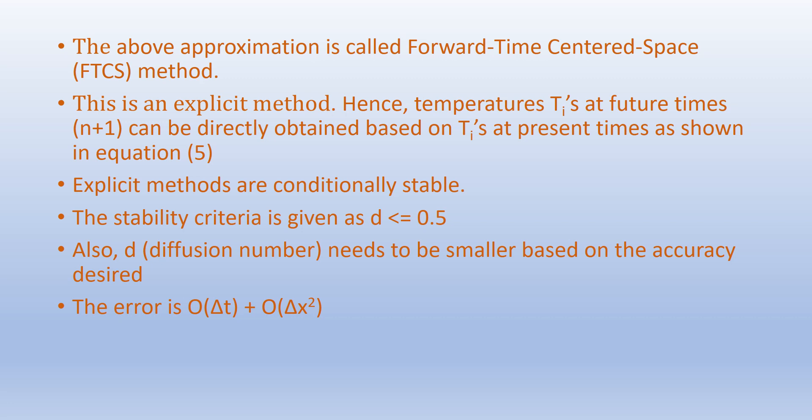The FTCS method is an explicit method, so temperatures at future time n+1 can be directly obtained based on temperatures at the present time, as shown in equation 5. The stability criteria requires D ≤ 0.5 for 1D diffusion problems. D also needs to be smaller based on the accuracy desired. The error in this method is of the order Δt + O(Δx²).